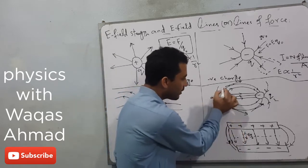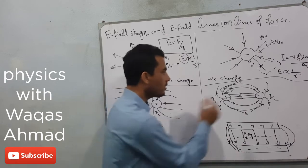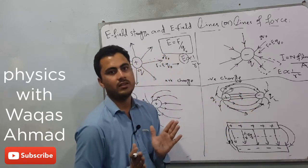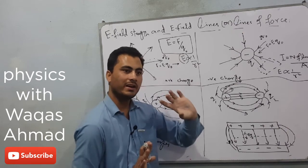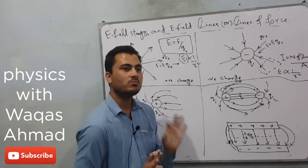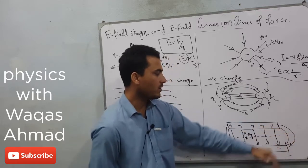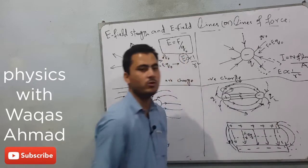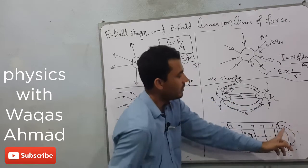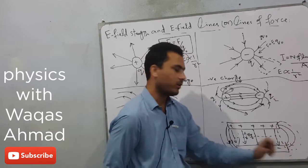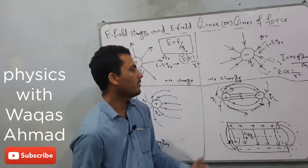The region where the field lines are crowded has greater electric field strength, and the region where the field lines are spread apart has smaller electric field strength. There is also fringing or bulging of the electric field at the edges of the plates. If we consider only the middle region, it represents a uniform electric field, while the fringing field at the edges represents the non-uniform region.